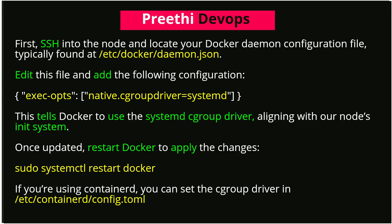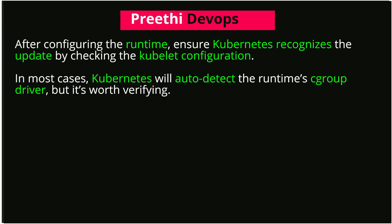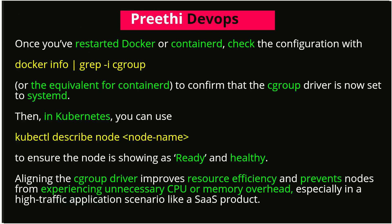If you're using containerd, you can set the cgroup driver in /etc/containerd/config.toml. After configuring the runtime, ensure Kubernetes recognizes the update by checking the kubelet configuration. In most cases, Kubernetes will auto-detect the runtime cgroup driver, but it's worth verifying. Once you've restarted Docker or containerd, check the configuration with docker info | grep -i cgroup, or the equivalent for containerd, to confirm that the cgroup driver is now set to systemd.